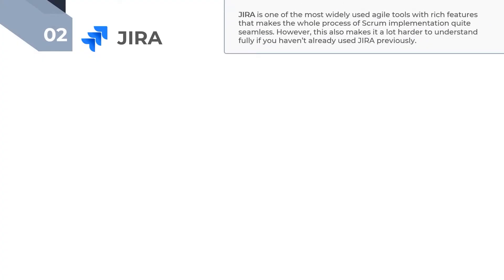You would have probably heard of Jira because it is one of the most widely used agile tools for scrum. Jira products were built to assist teams of all types in managing their work, and it provides nearly every agile capability you can think of. Though Jira is loved by many teams around the world, it isn't without its flaws. The biggest pitfall to Jira is due to its steep learning curve, slowness, and clutter — it can be hard to get started with if you haven't already used Jira previously.